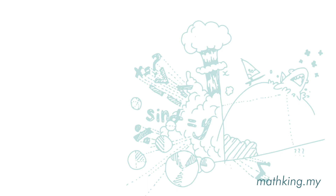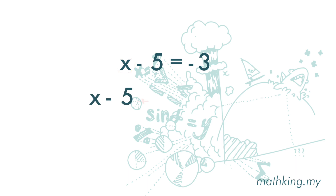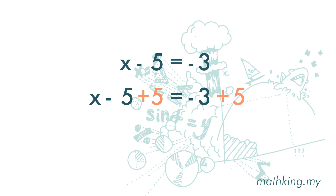Next, let's look at subtraction in an equation. Here x minus 5 is equal to negative 3. We want to find x, so we need to remove 5 to isolate x. We add positive 5 on the left hand side, because negative 5 plus 5 gives us 0. Since this is an equation, the left hand side and right hand side must be equal, so we add 5 on the right hand side as well. Then x is equal to negative 3 plus 5, and we get 2.